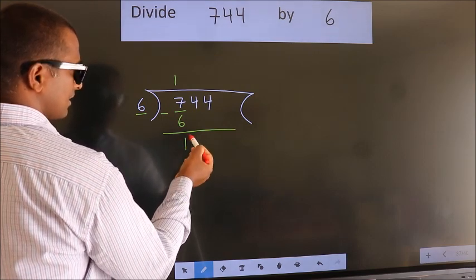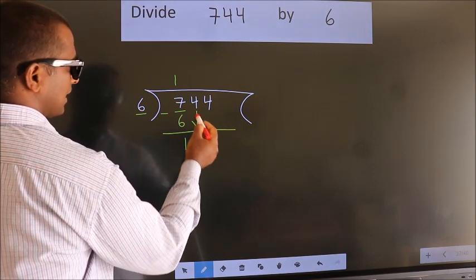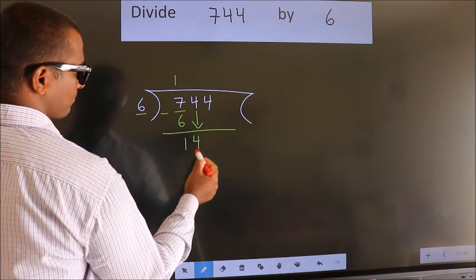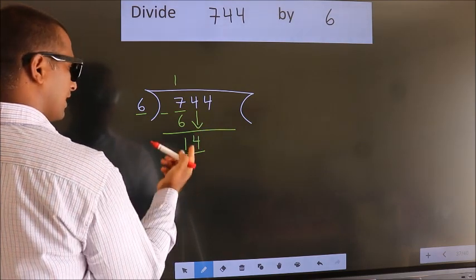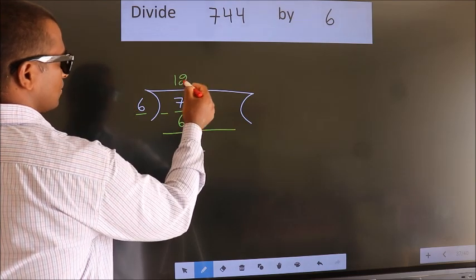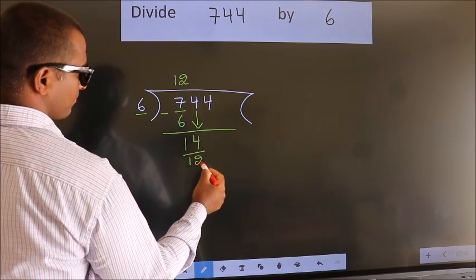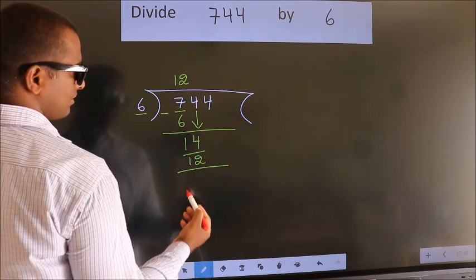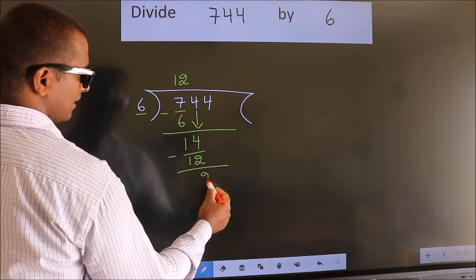After this, bring down the beside number. So 4 down. So 14. A number close to 14 in 6 table is 6 2s, 12. Now we subtract. We get 2.